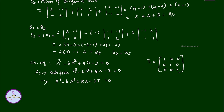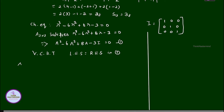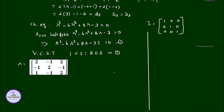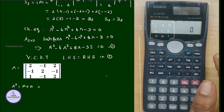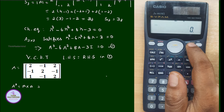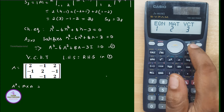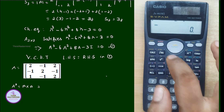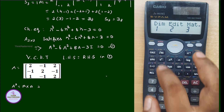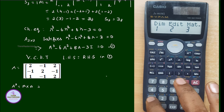Now, our question is to verify the Cayley-Hamilton theorem, that is, to show that the left-hand side equals the right-hand side. Given matrix A, we compute A squared equals A times A. Here I am using calculator FX991. Go to mode, select matrix (option 2), then enter the matrix values using Shift 4, selecting the dimension of the matrix.